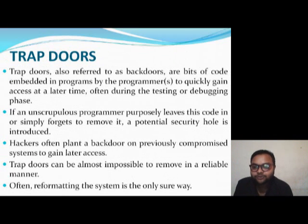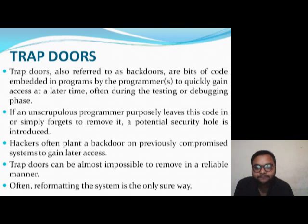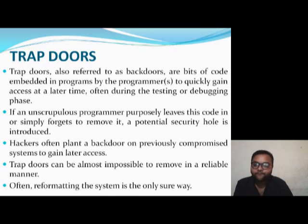Trapdoors are also referred to as a backdoor — a byte of code emitted in a program by programmers to quickly gain access at a later time, often during the testing or debugging phases. An unscrupulous programmer may simply forget to remove it, introducing a potential security hole. Hackers often plant a backdoor on a compromised system to gain later access. Trapdoors can be almost impossible to remove in a reliable manner, and often reformatting the system is the only sure way.